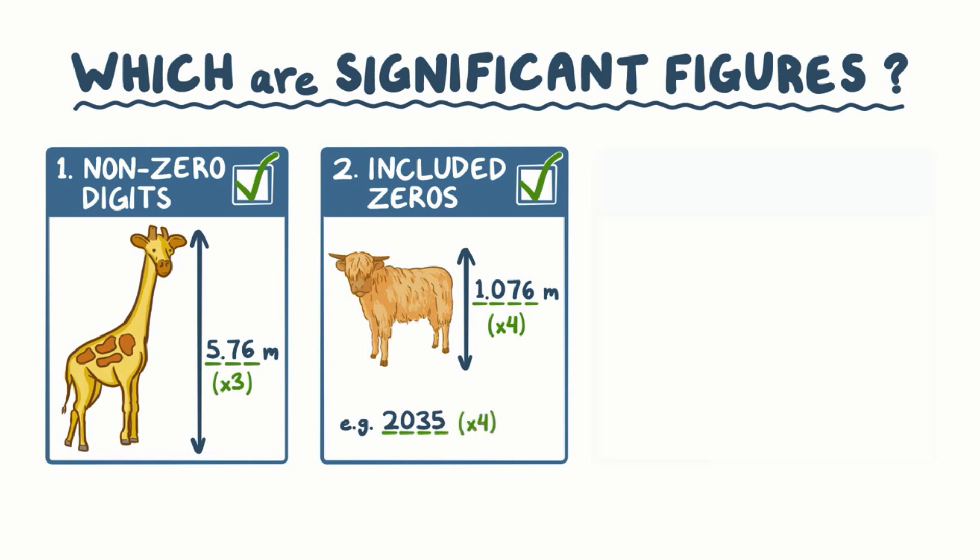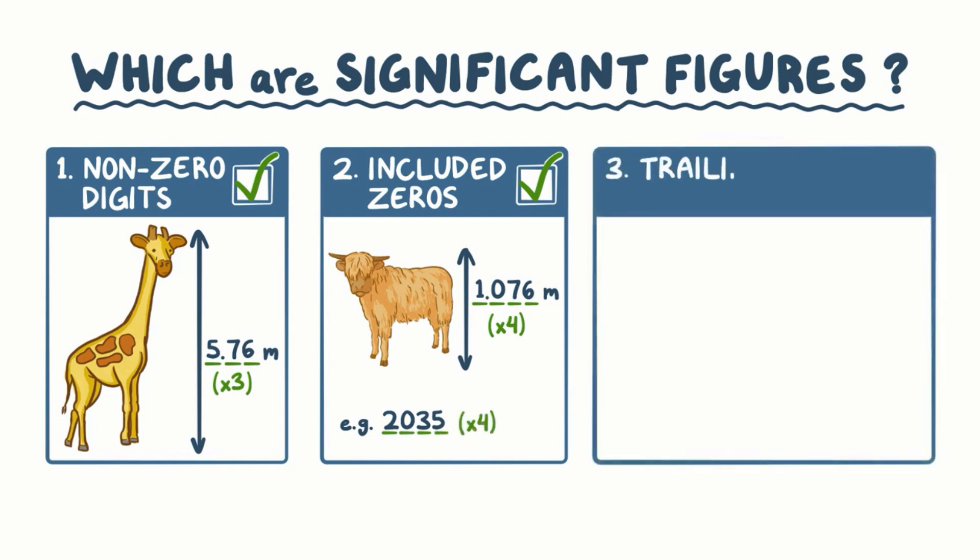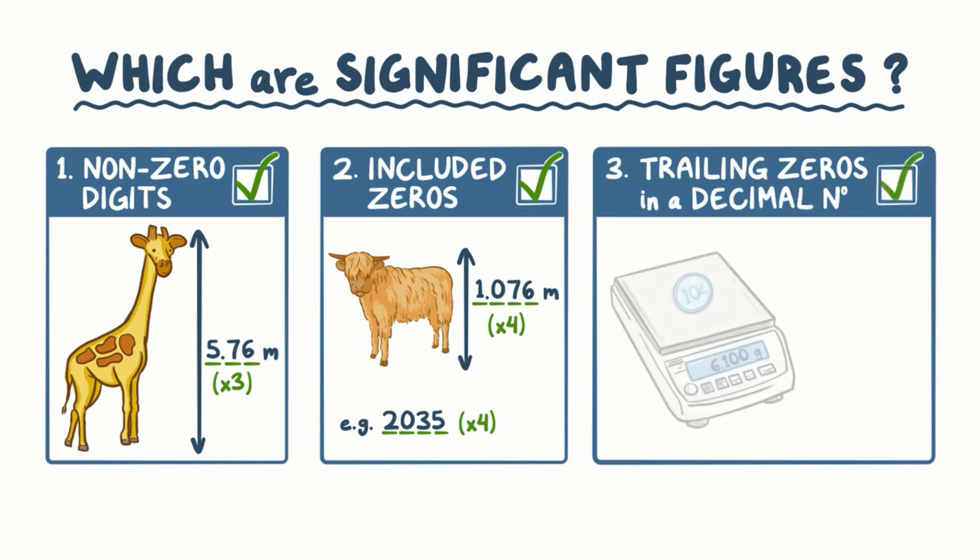Rule 3 is that trailing zeros in a decimal number are significant. So if we had a measurement on a balance of 6.100 grams, the two trailing zeros, since they're in a decimal number, are significant, so there are four significant figures.